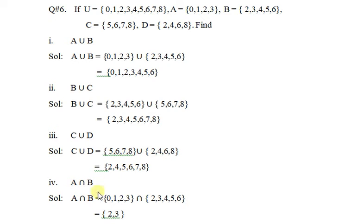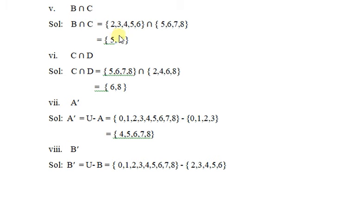Part 3 and part 4: A intersection B is equal to set of A intersection set of B. The common elements from set A and set B are written in the answer. B intersection C: common elements of set B and set C are written in the answer. C intersection D is equal to set of C intersection set of D — common elements of set C and set D.